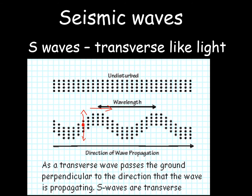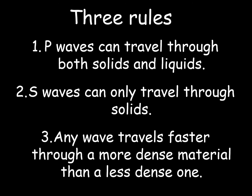S waves work best when there are chemical links between particles, so for the purposes of this model, S waves propagate best in solids and don't really propagate well in liquids. This kind of up-and-down wave propagates far better in solids and is very poor at propagating in liquids. So there are three basic rules: P waves can travel in solids and liquids; S waves can only travel through solids; and any wave travels faster through a more dense material.